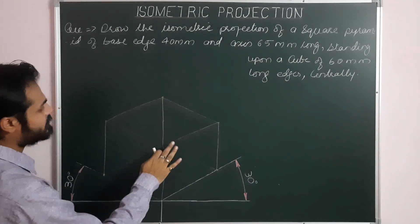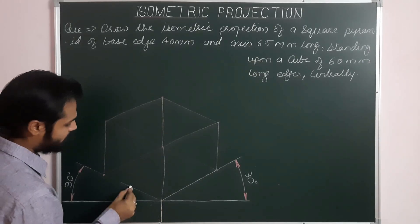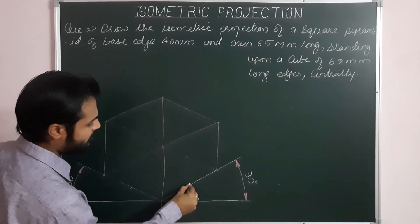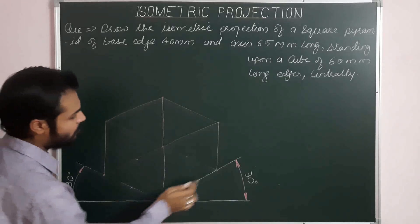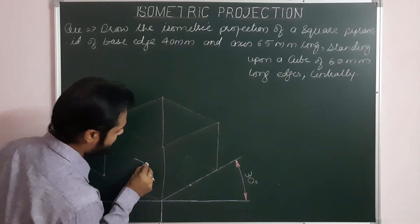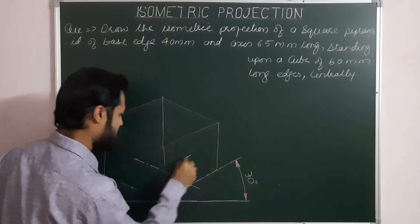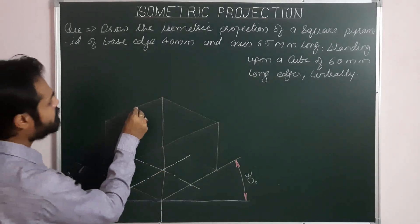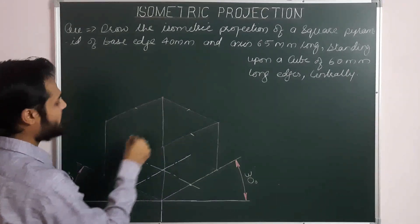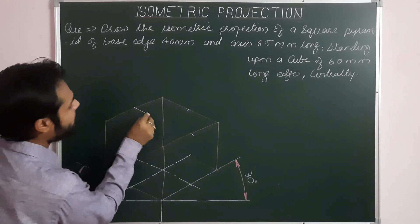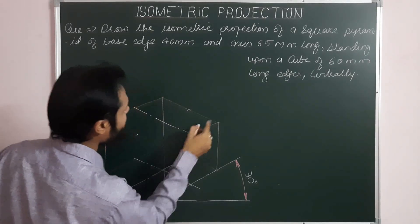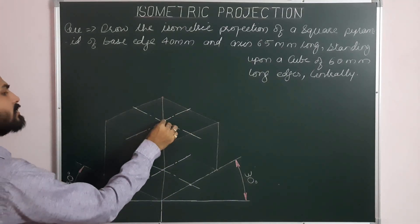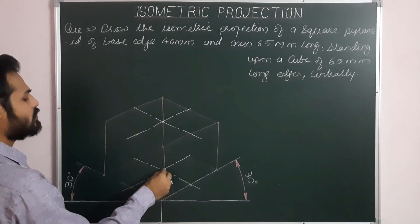Next we have to draw the axis of the cube, or simply mark the center lines. We bisect all four sides of the top base and draw lines passing through them to get the center. Similarly, from all midpoints draw lines parallel to the sides — parallel to the first and second iso axis — and you will get the center. So this gives us the top center and the bottom center of the cube.